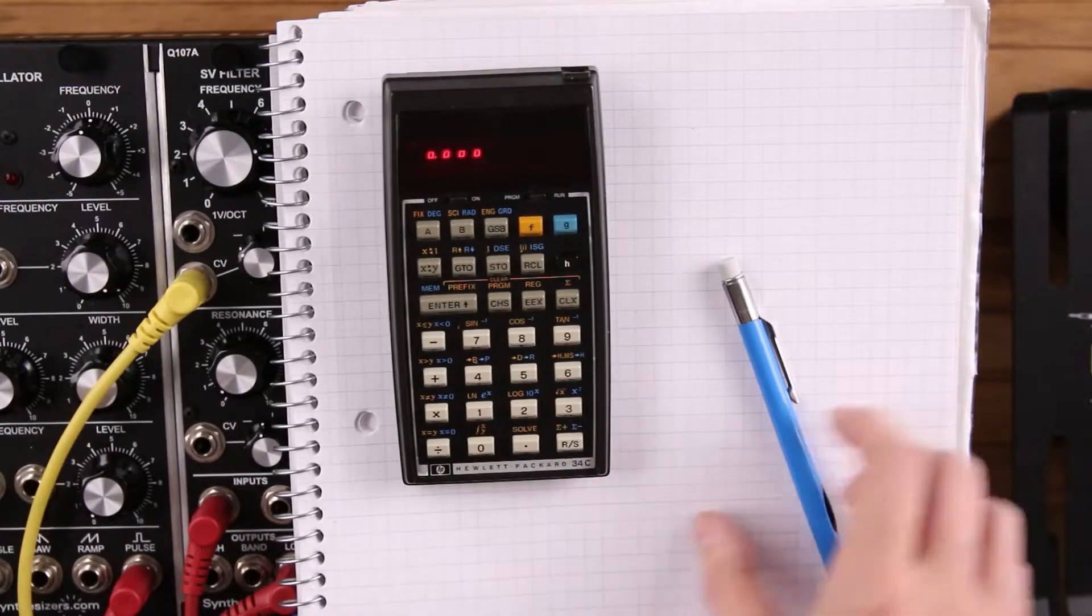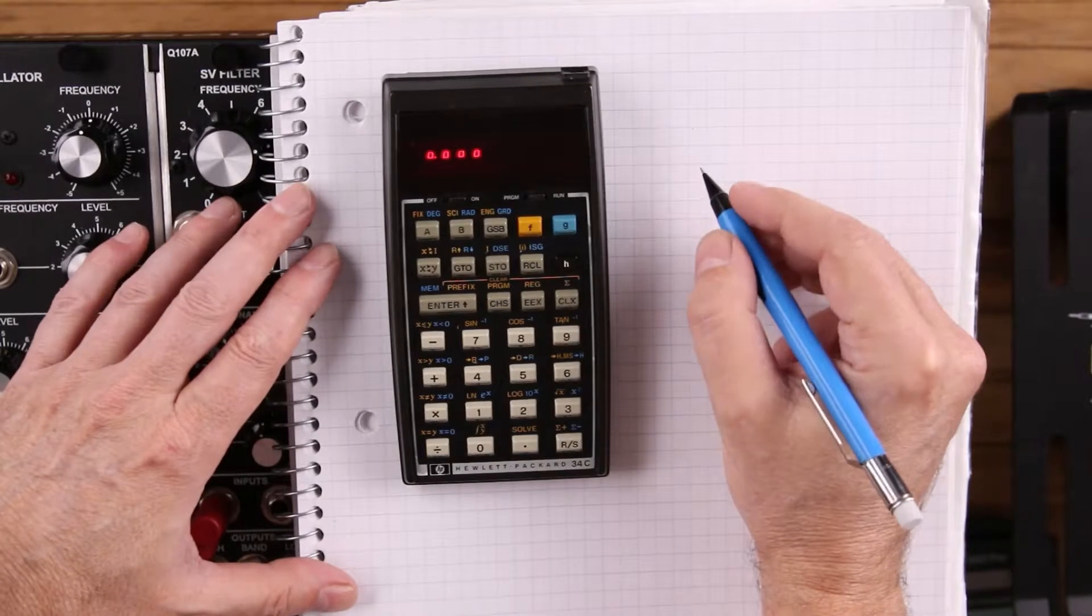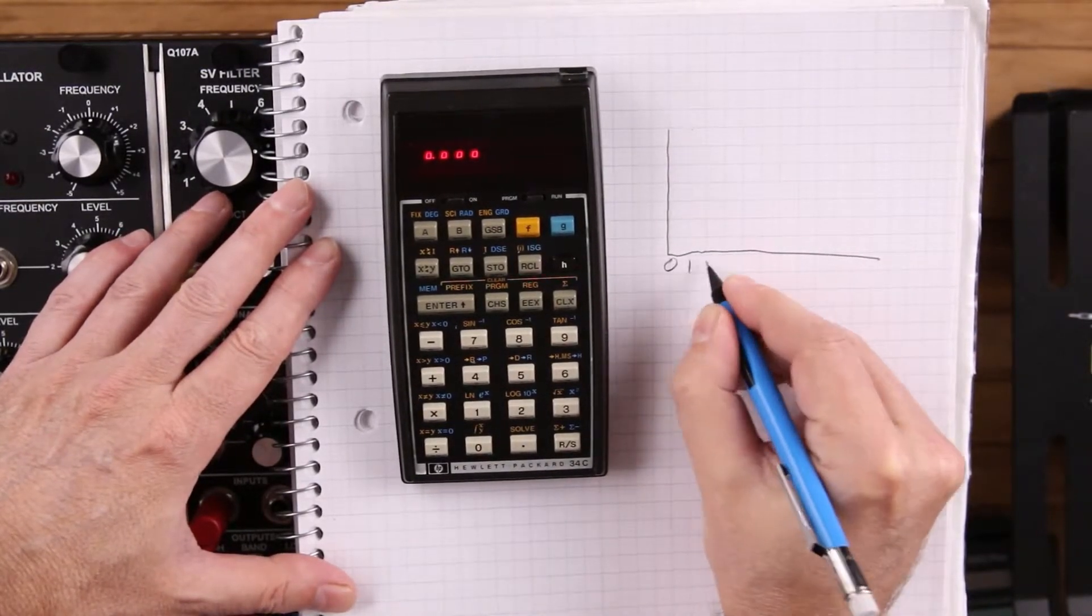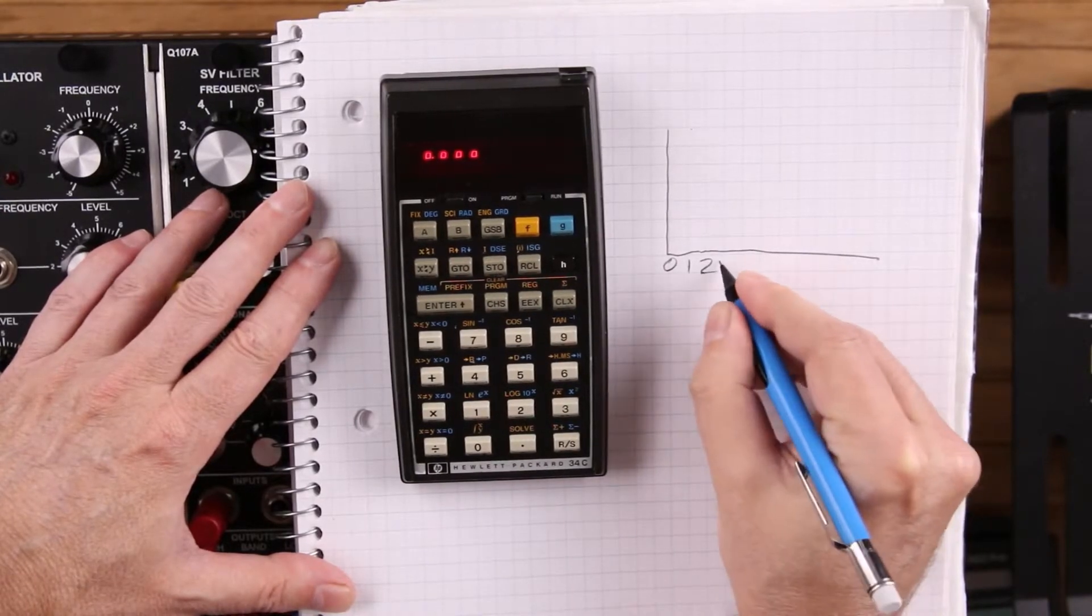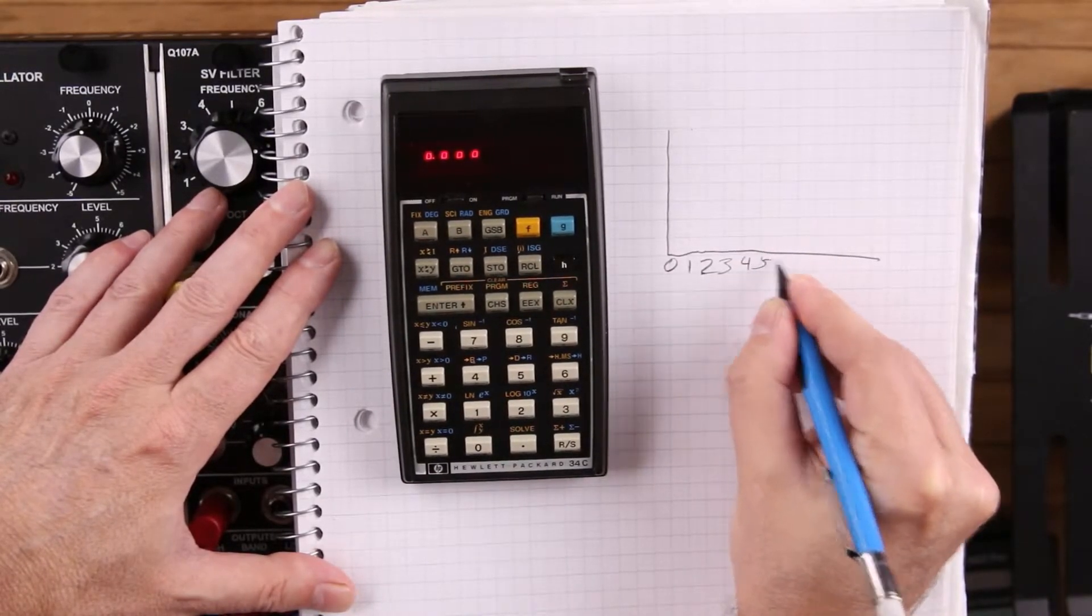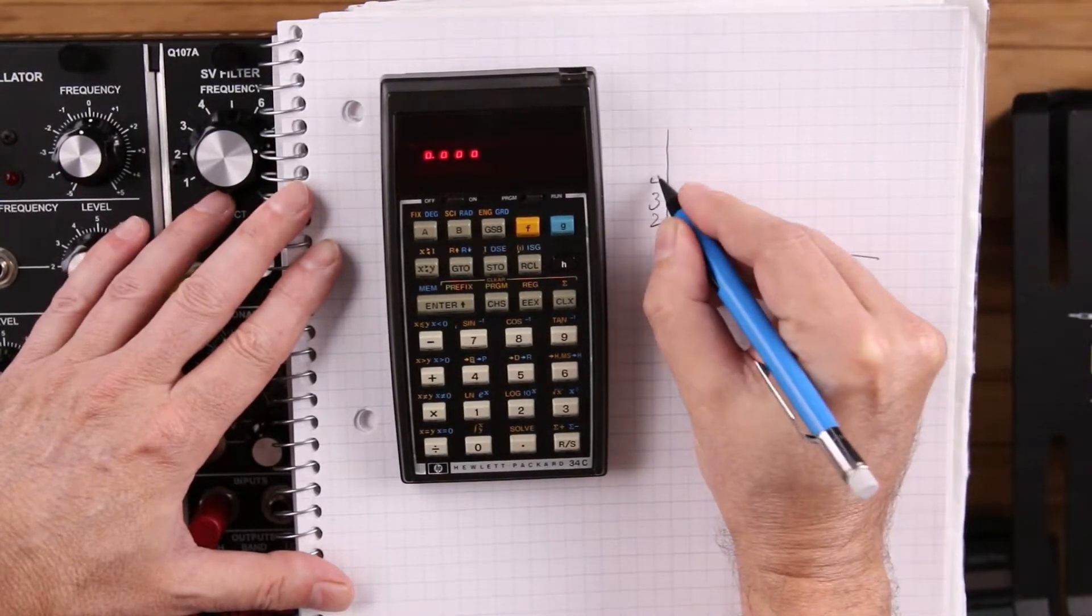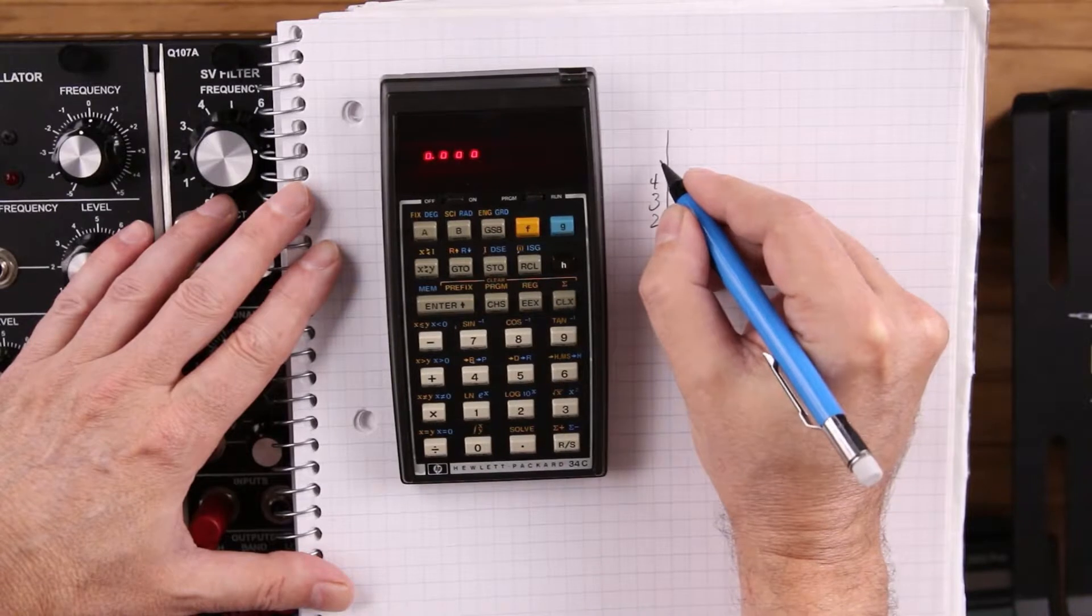So what I'm going to do is a simple little function here. Let's do something very simple. And in this function, it's just going to return the X register.